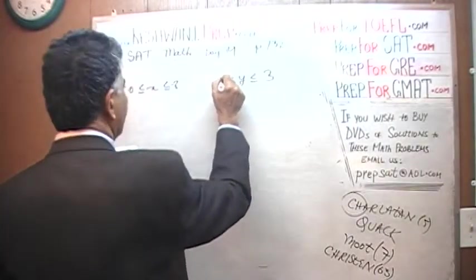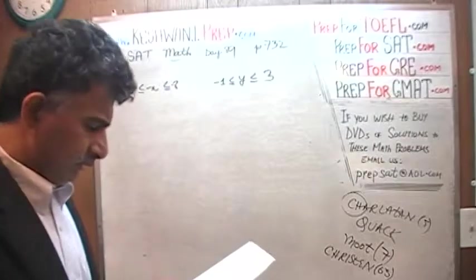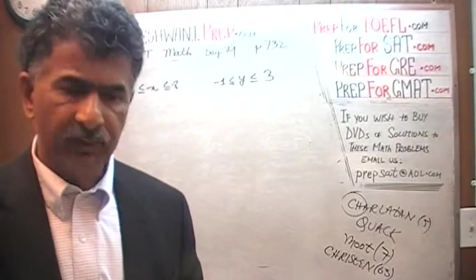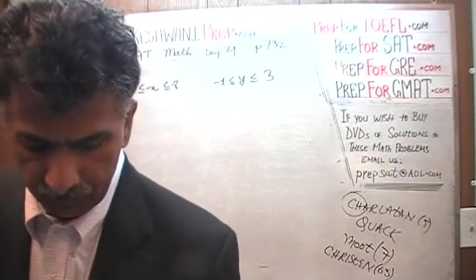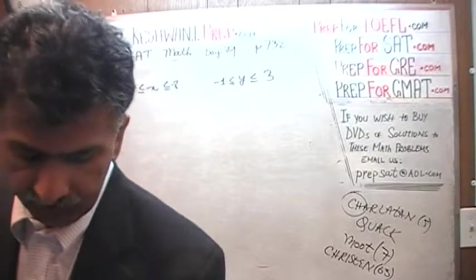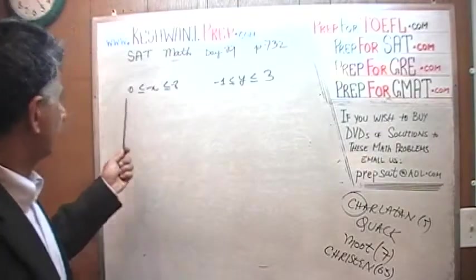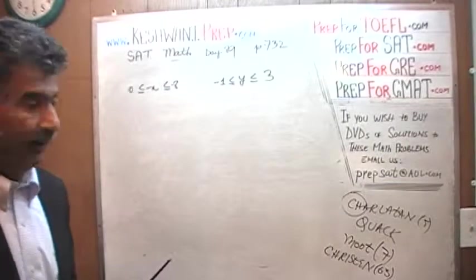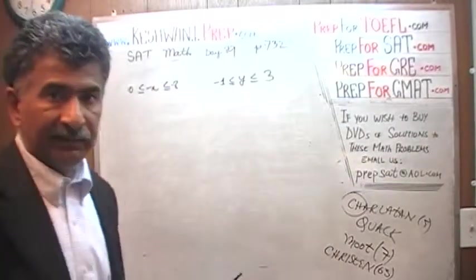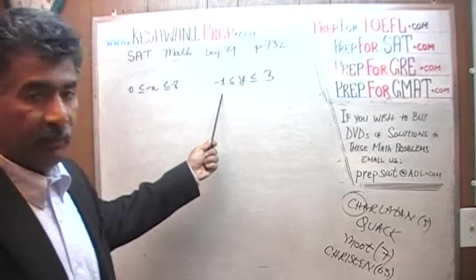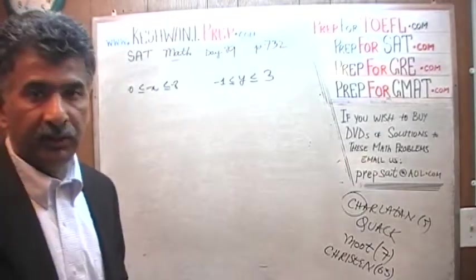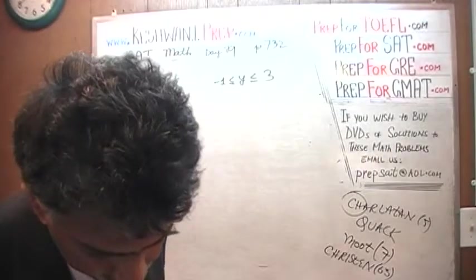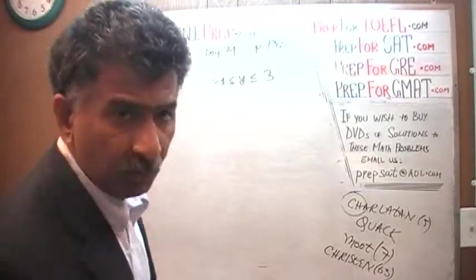The question is, which of the following gives the set of all possible values for X times Y, the product of these two variables, X times Y, given the fact that the lowest value that X can assume is 0, and the highest value that X is allowed to assume is 8, and given the fact that Y is allowed to be all the way down to negative 1 and all the way up to 3, what is the maximum possible value?